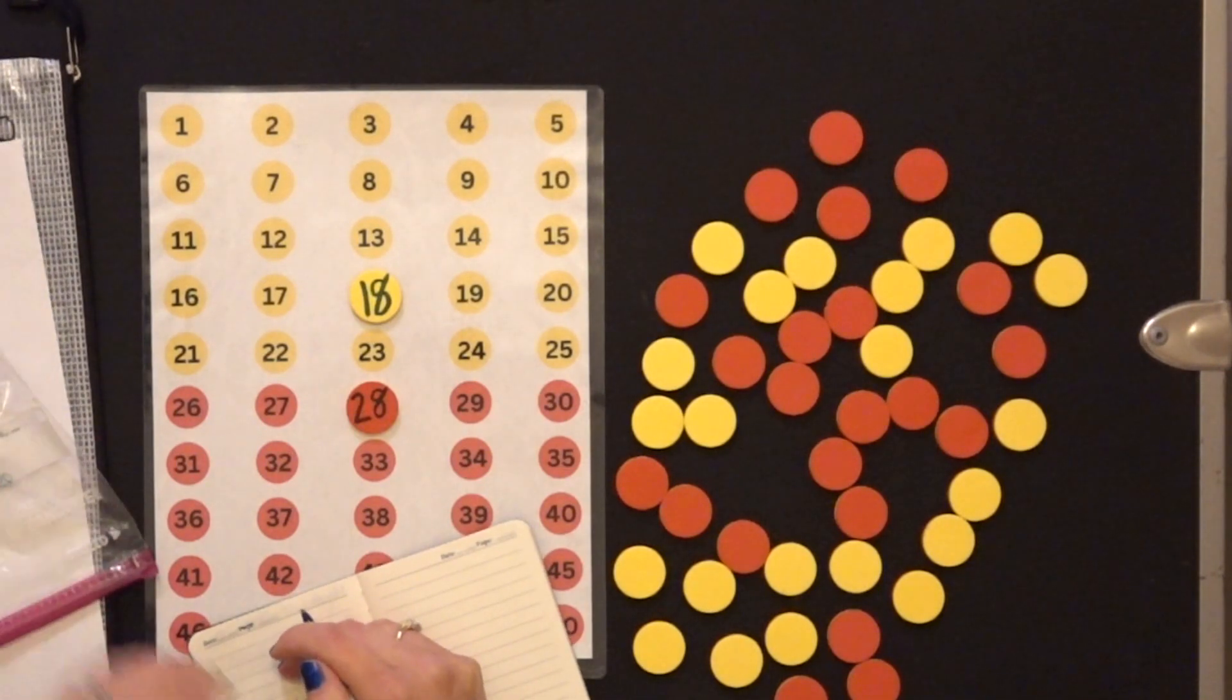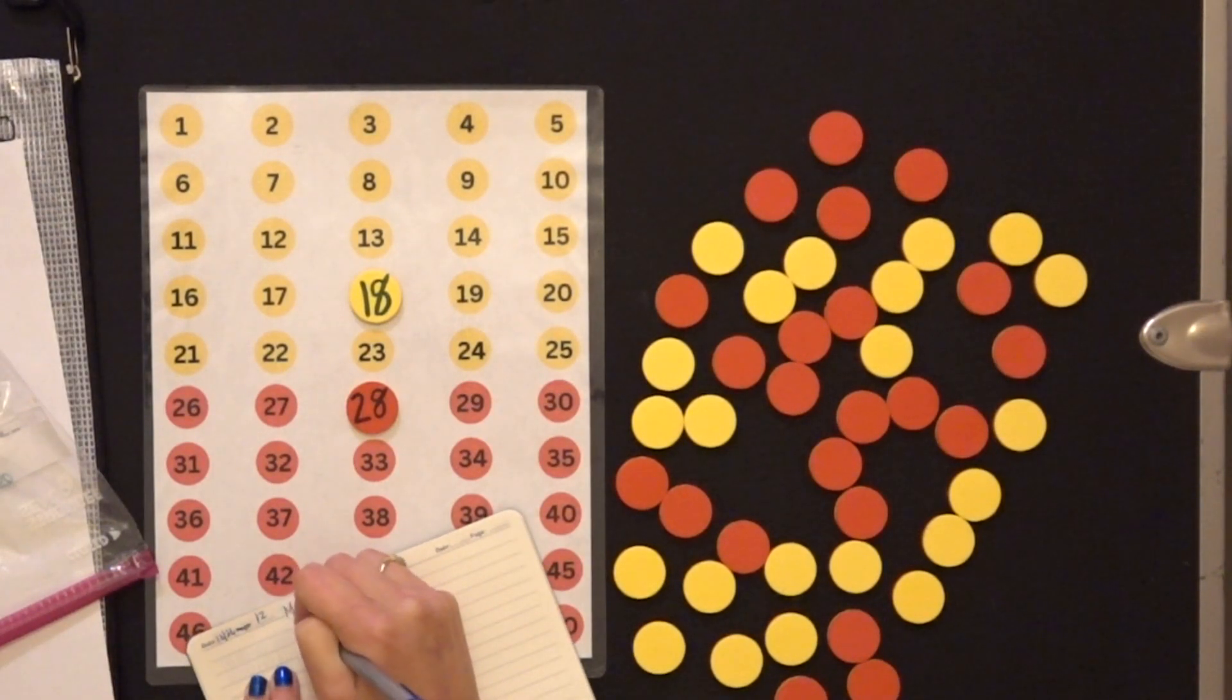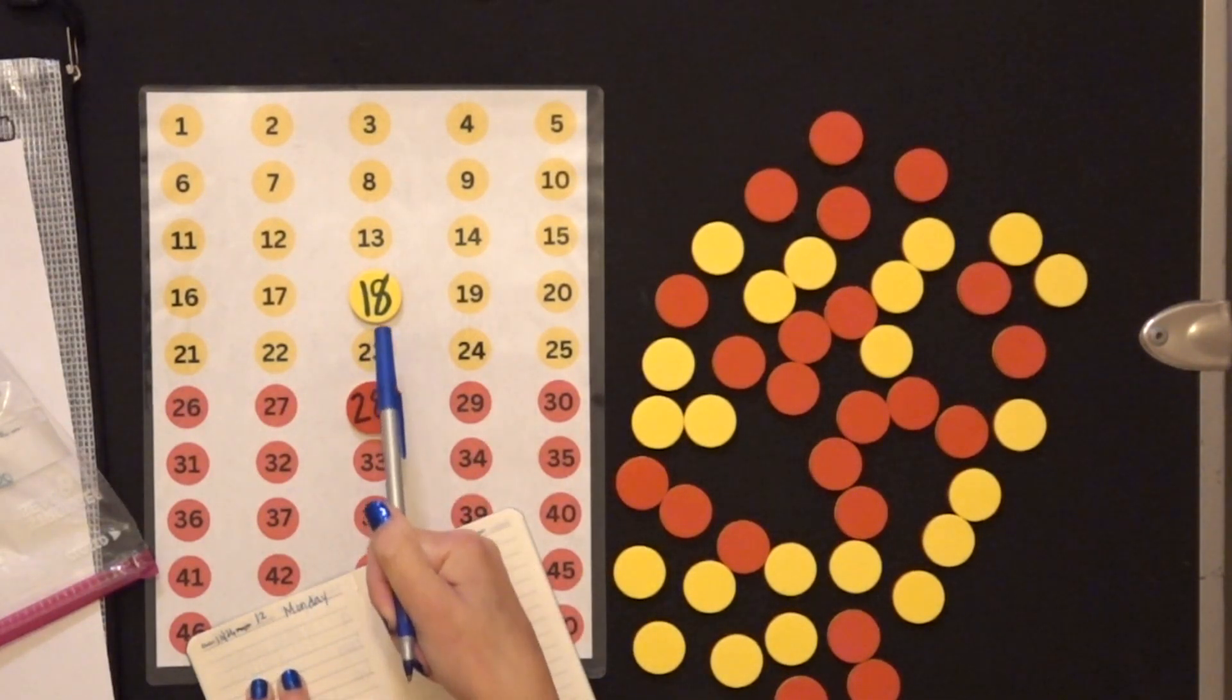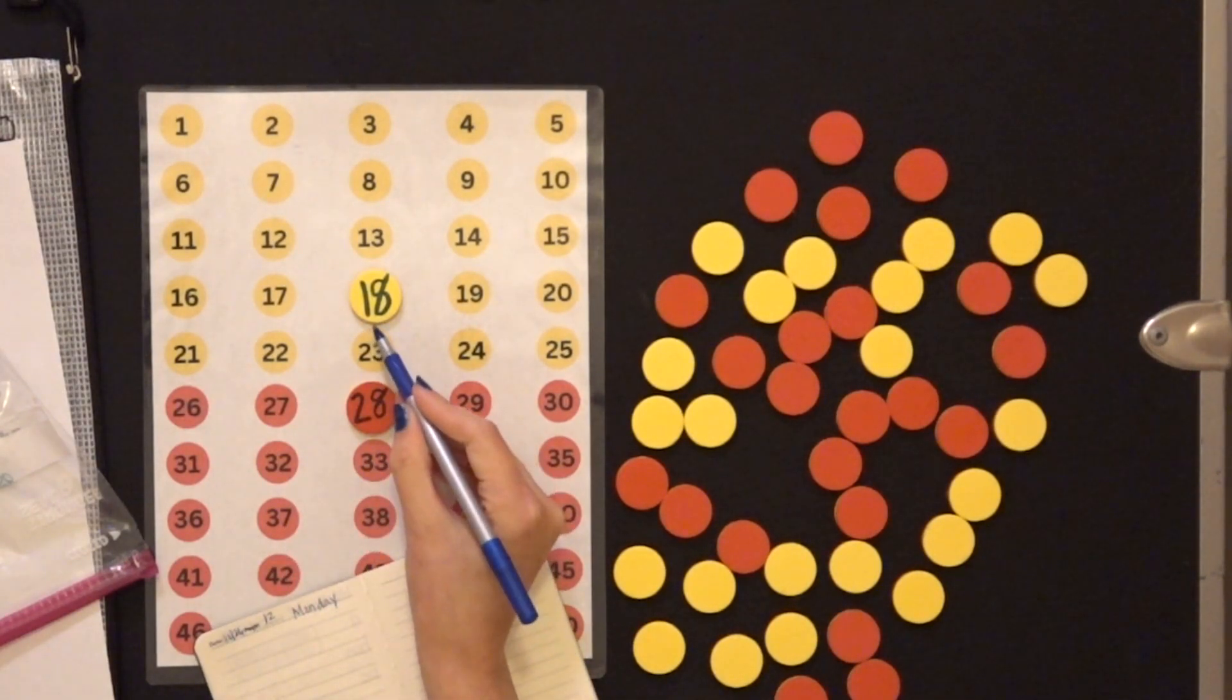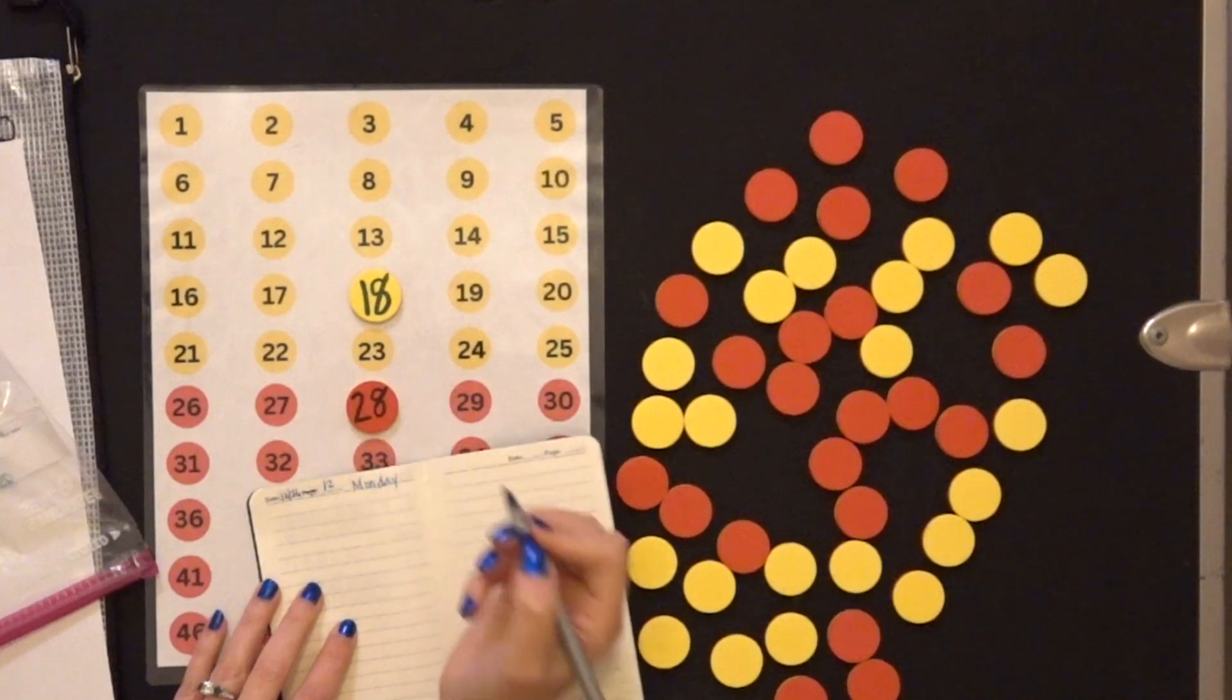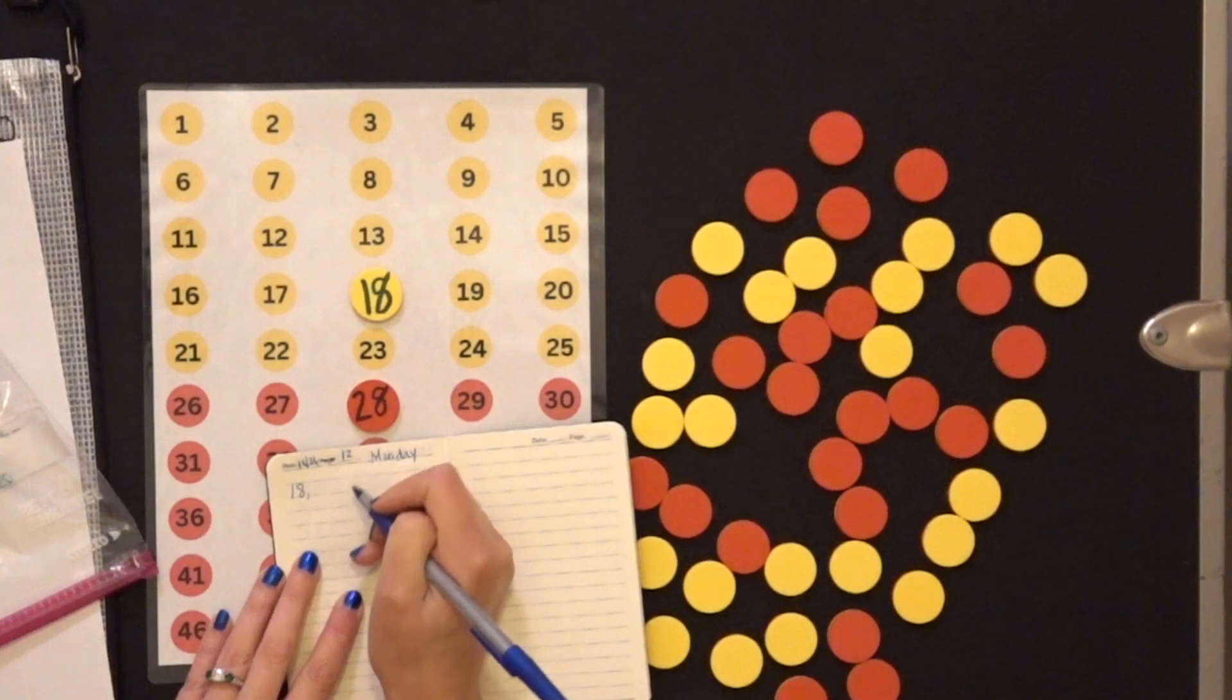So I'm going to write 12. I'm going to put today's date. And I'm going to write Monday. And I'm going to write the pair that I had. And I counted on. So I started at 18. So I'm going to write 18 here. And then I need to put a comma.